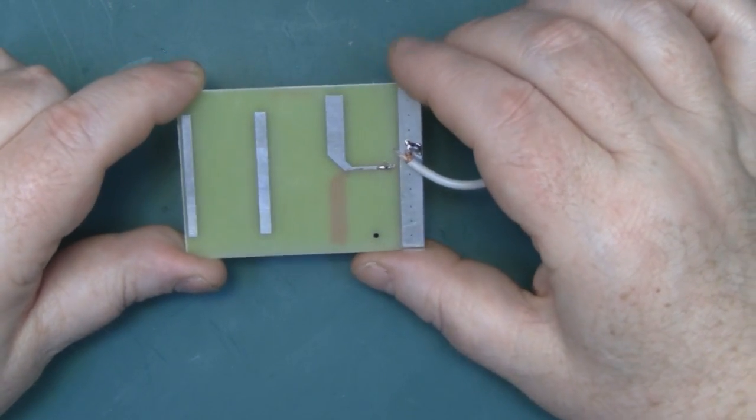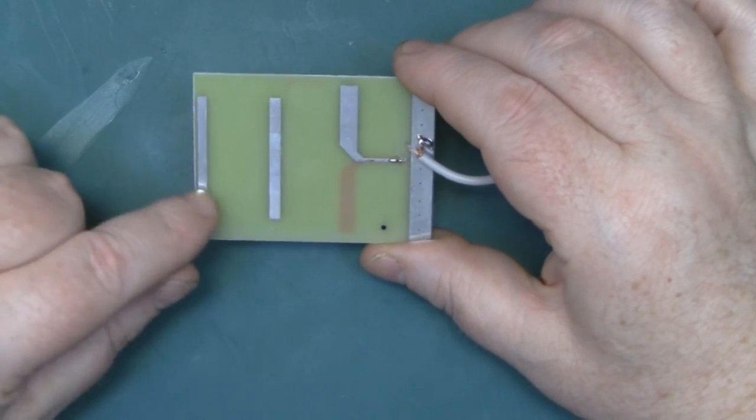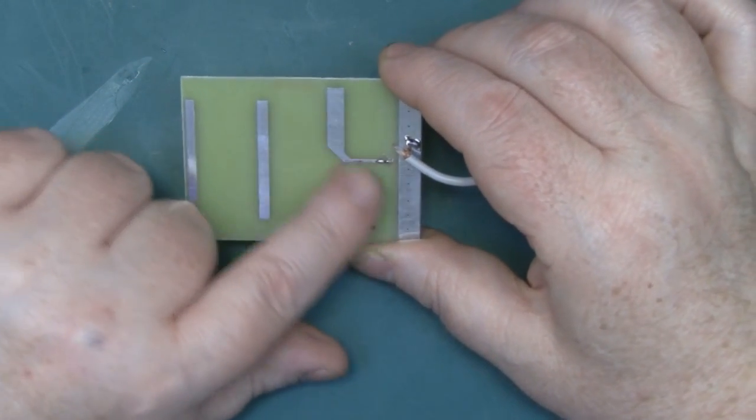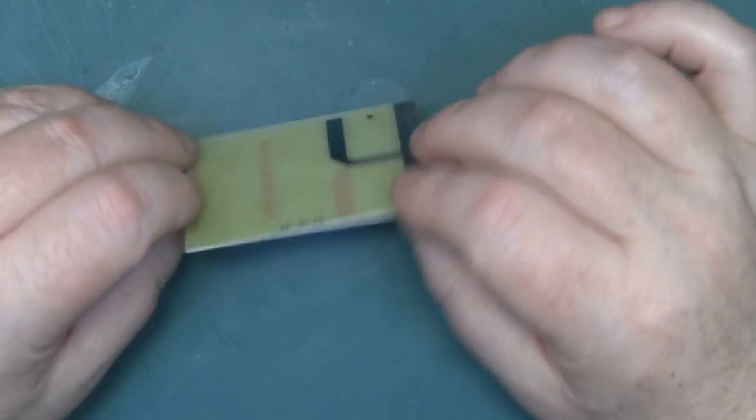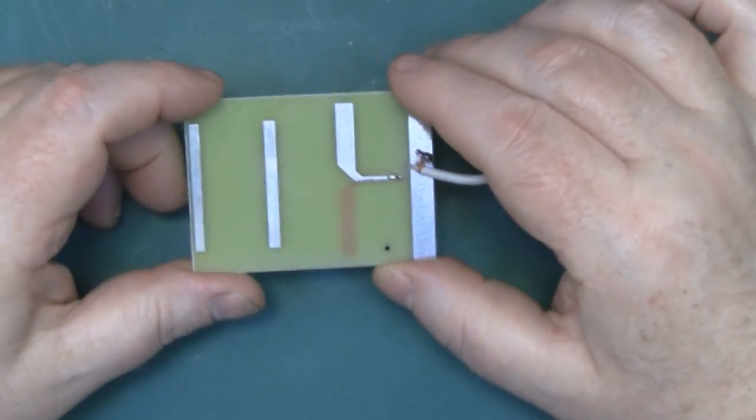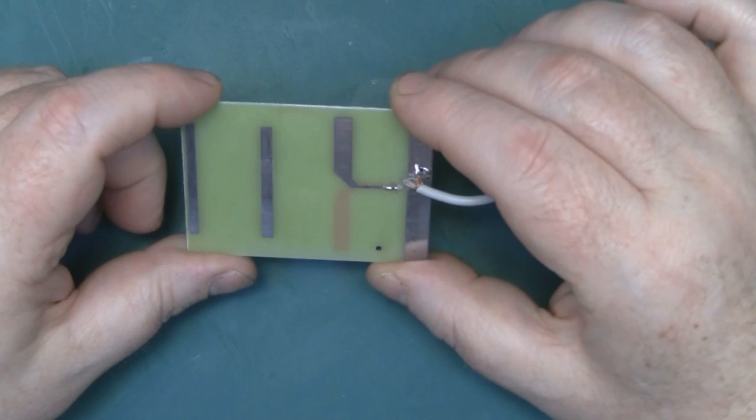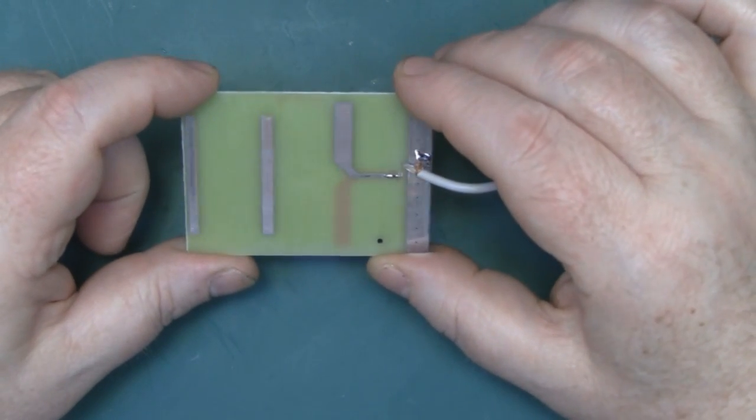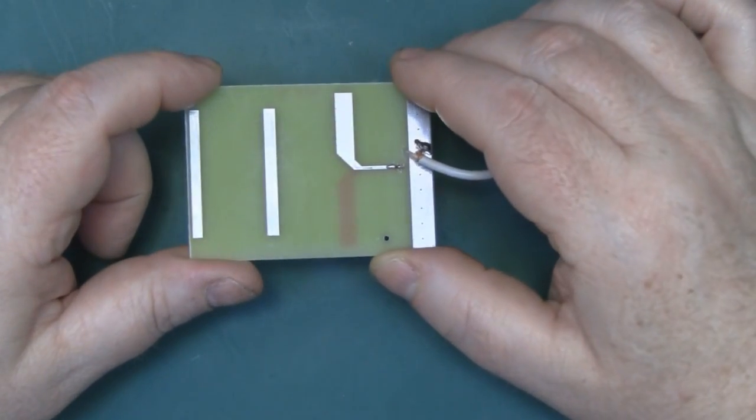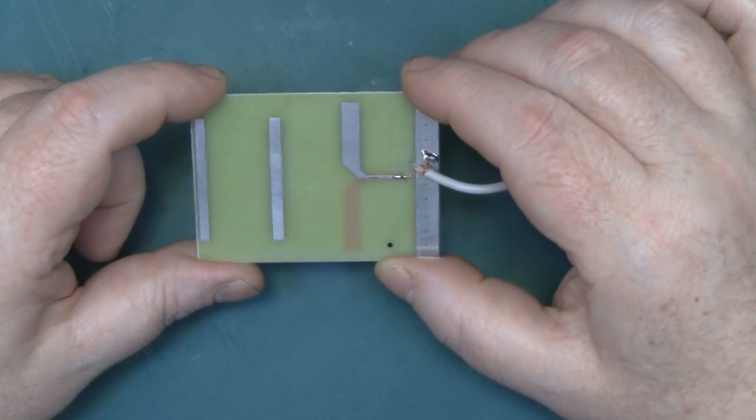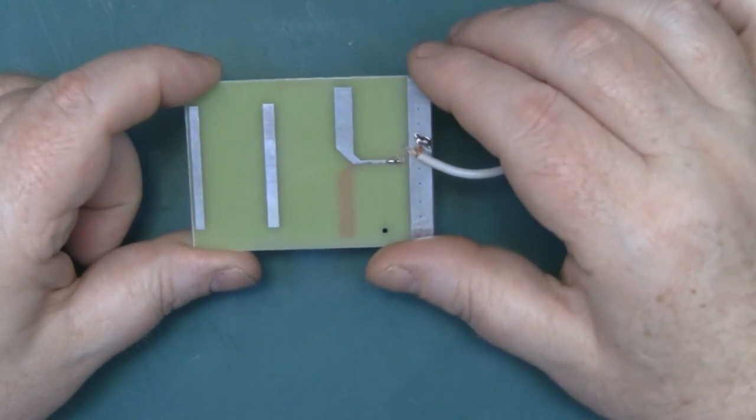Now instead of actually just getting my ruler or my calipers out and telling you the different measurements of this Yagi if you wanted to reproduce it yourself, what I've actually done is I've made a PDF so you can actually download it, print it off, and you can make your own little PCB using this design if you want to.